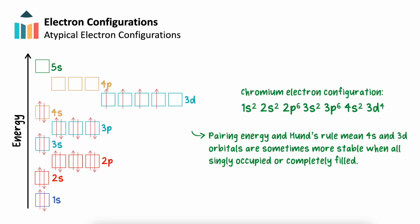This is the case for chromium. Typical electron configuration rules would give an electron configuration ending in 4s2, 3d4. However, evidence has found that chromium's 4s and 3d orbitals are all singly filled, with its electron configuration actually ending in 4s1, 3d5.